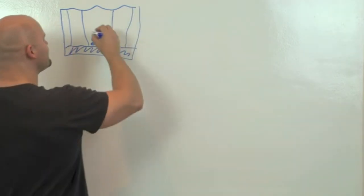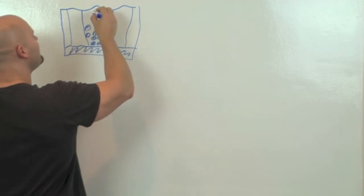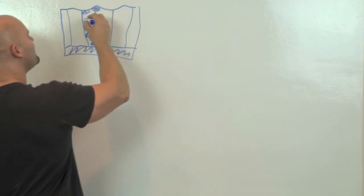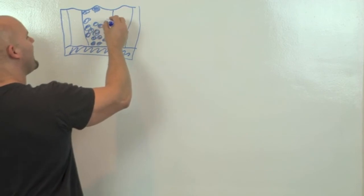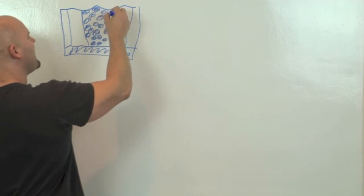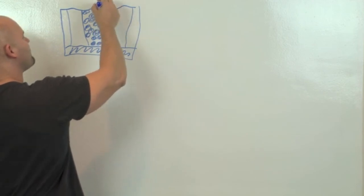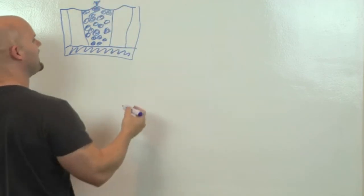it creates pockets so that fat cells can get in here and push up into the skin and grow and stretch this. So you end up getting puckering, by puckering I mean this structure right here.